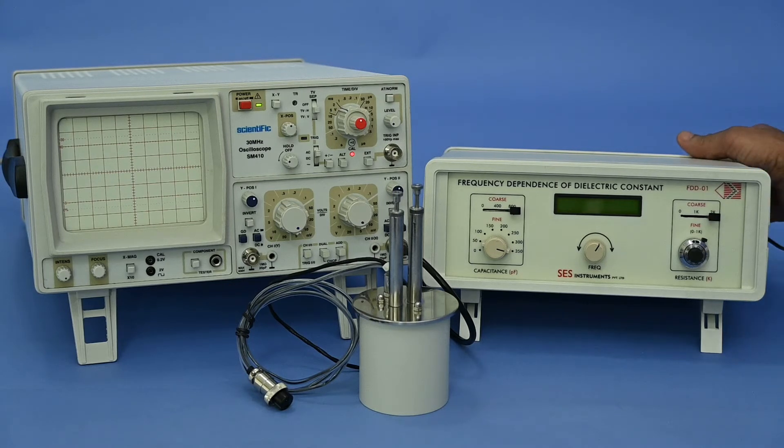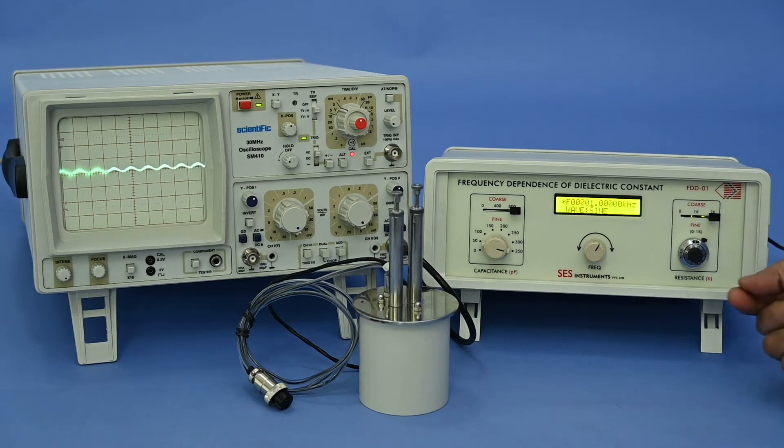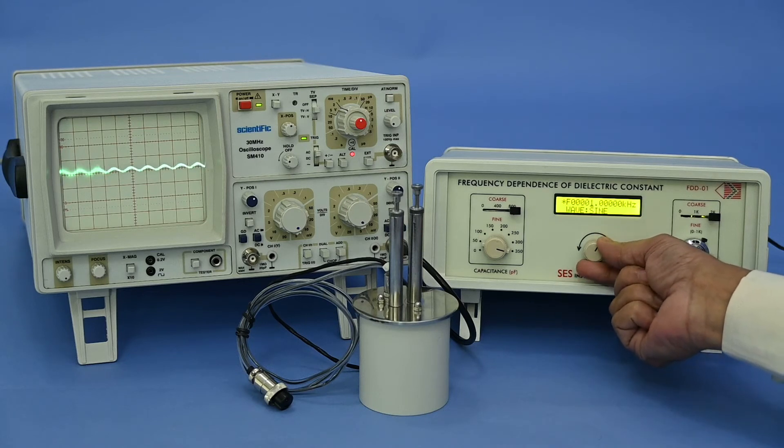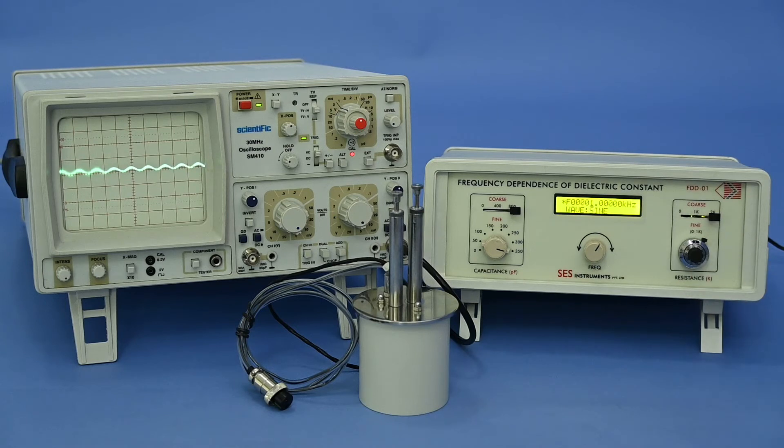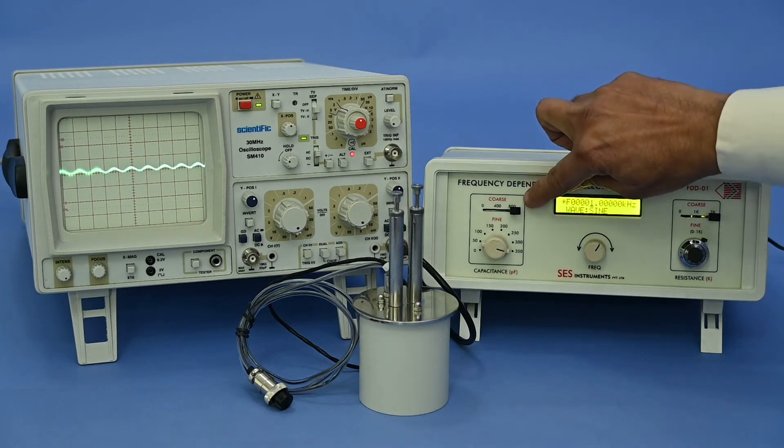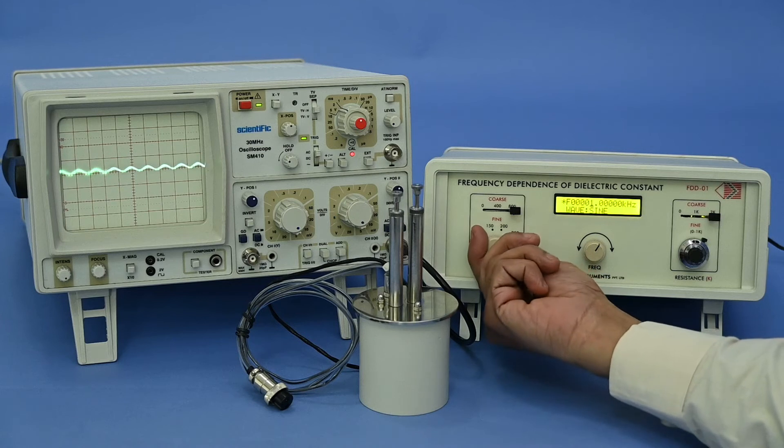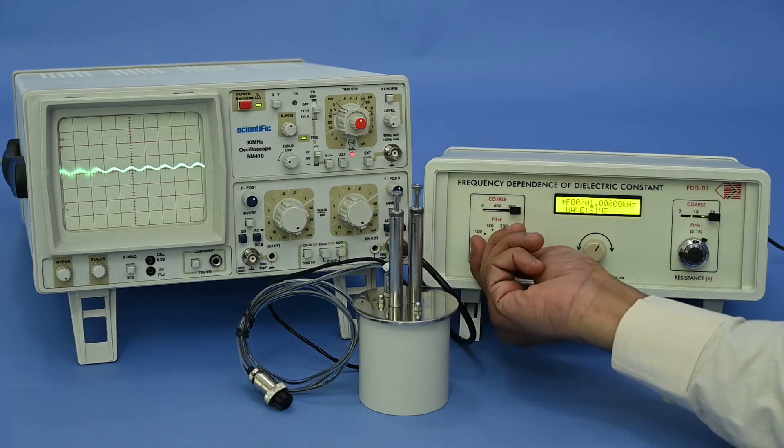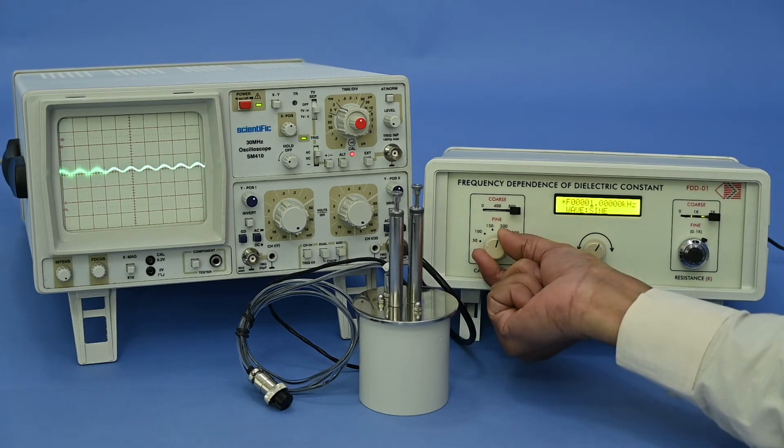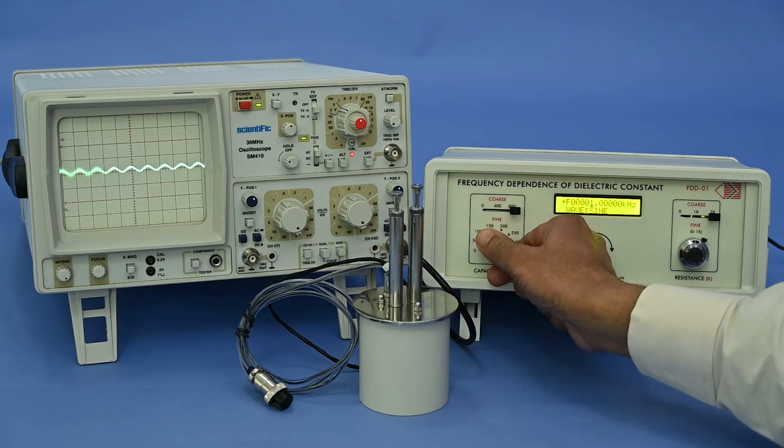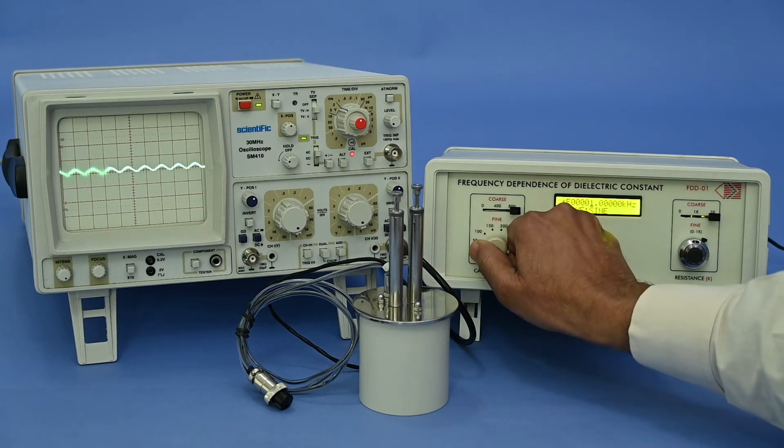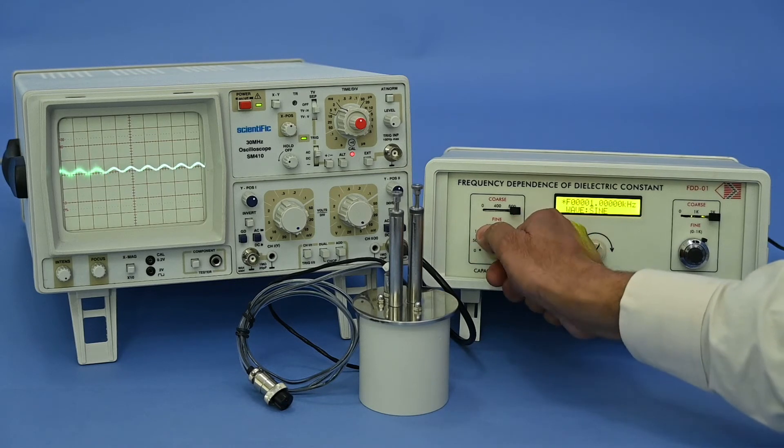Now, the setup is ready to perform the experiment. Switch on the main unit of FDD01 and set the frequency 1 kHz. And balance the bridge to set the coarse and fine value of capacitance C4 as seen minimum amplitude on CRO. Note down this value of C4 and tabulate it as in table 1.